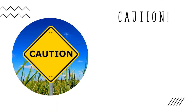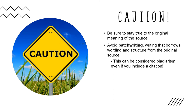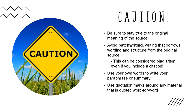Keep the following in mind. When using any of these methods, be sure to stay true to the original meaning of the source. You'll lose credibility with your audience if you attempt to skew the source's meaning in order to better support your argument. You should also be careful to avoid patchwriting — writing that borrows too much wording and structure from the original source — as this can be considered plagiarism even if you include a citation. Instead, make sure that you use your own words to write your paraphrase or summary and use quotation marks around any material that's quoted word for word.